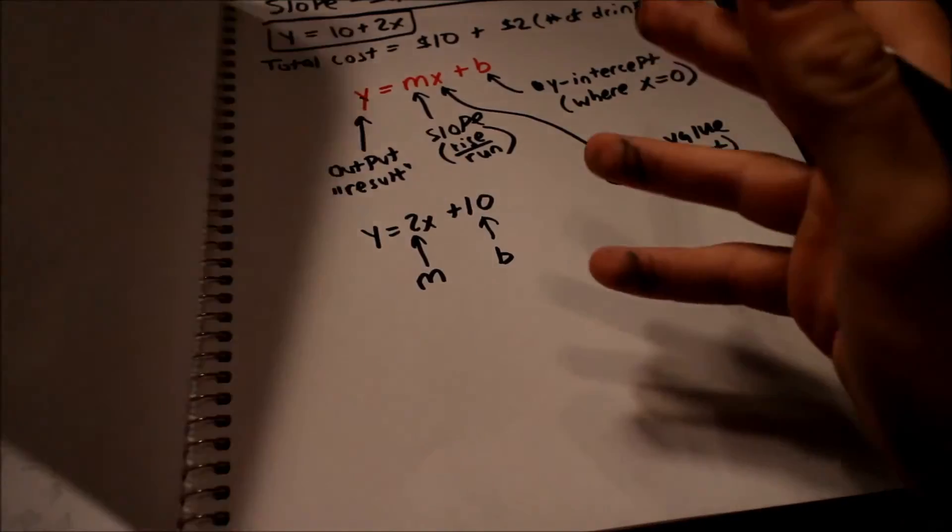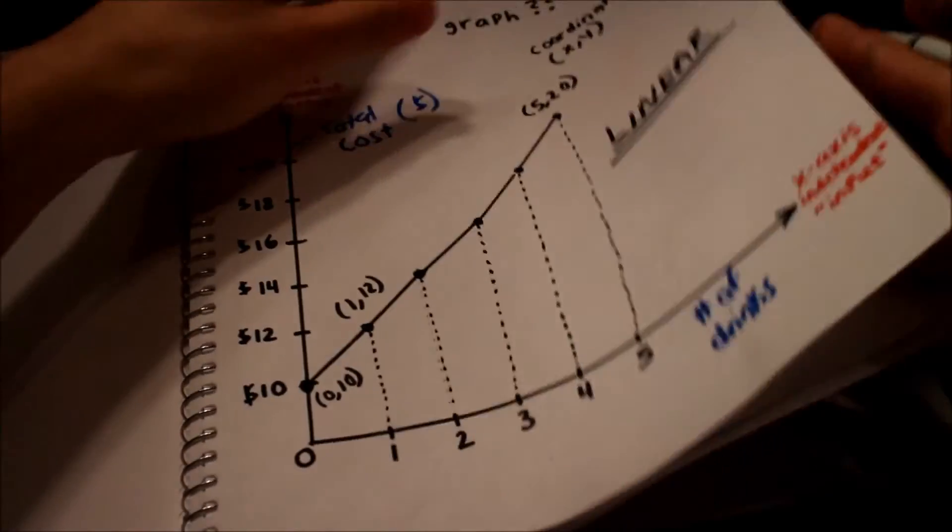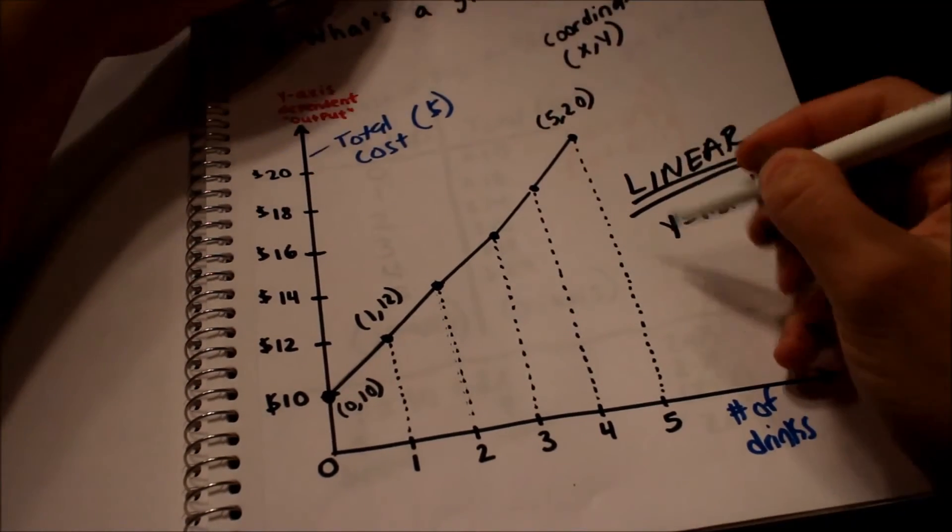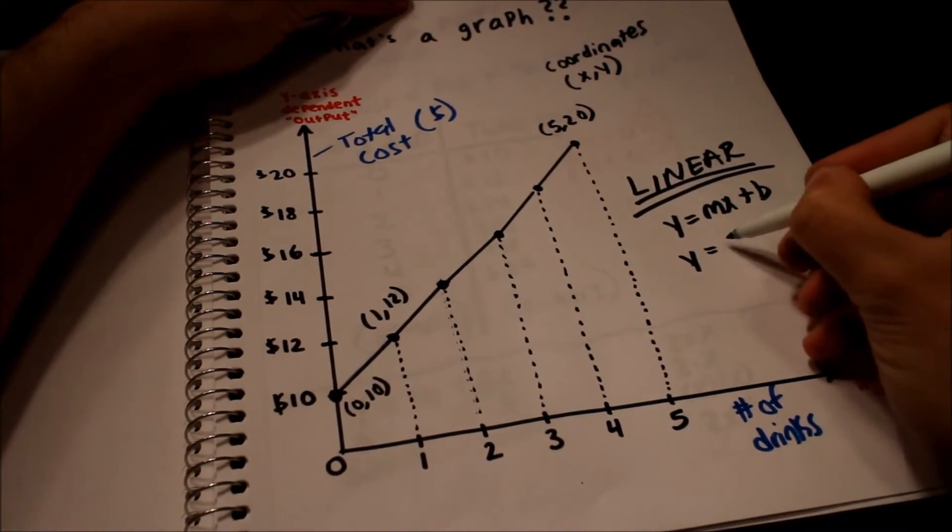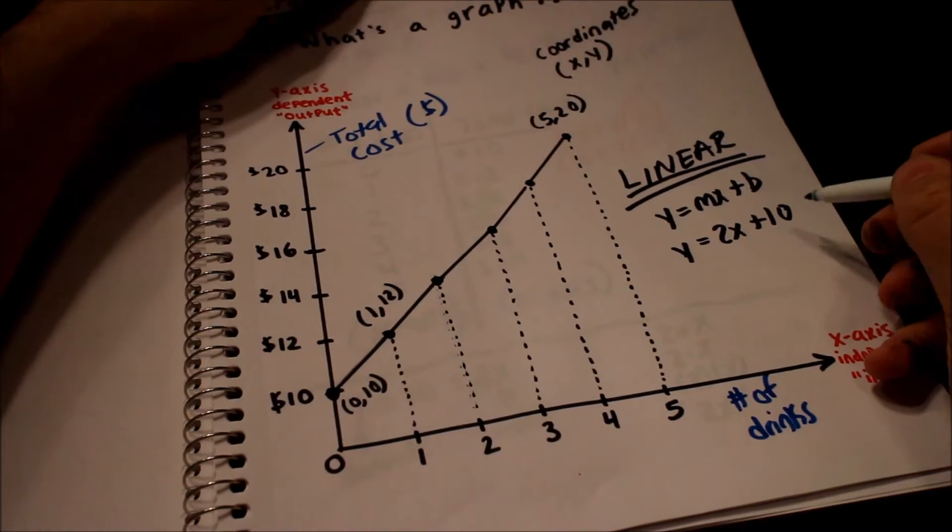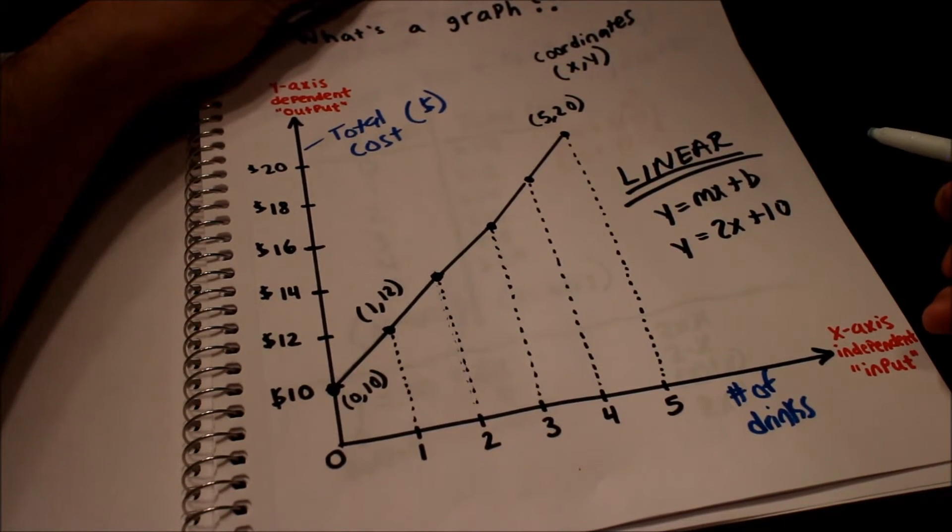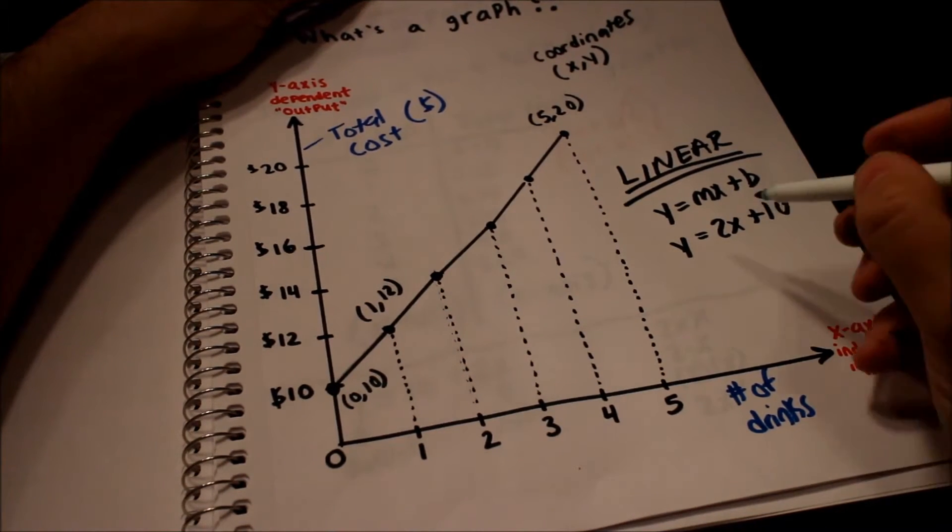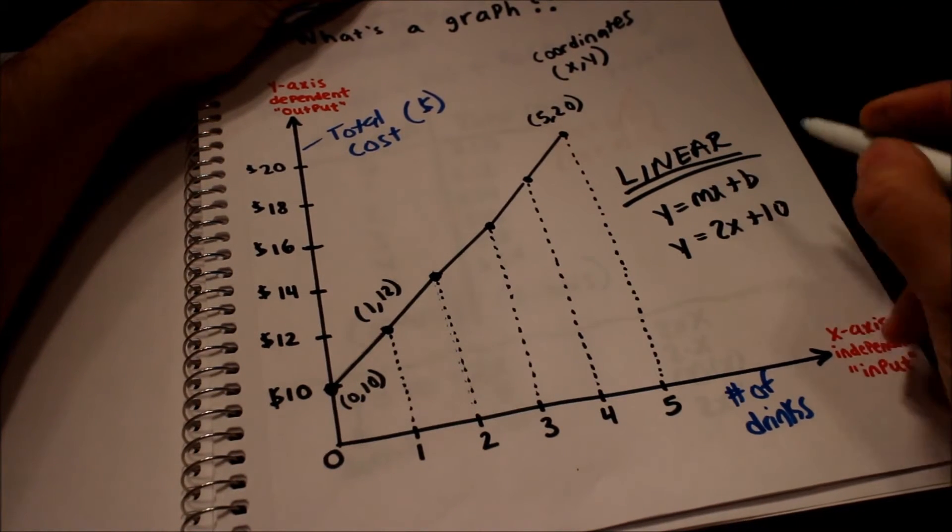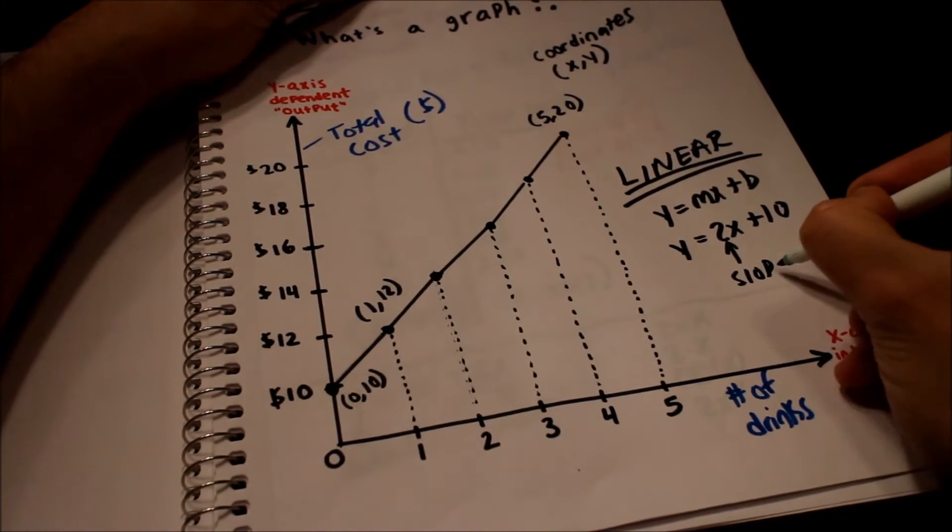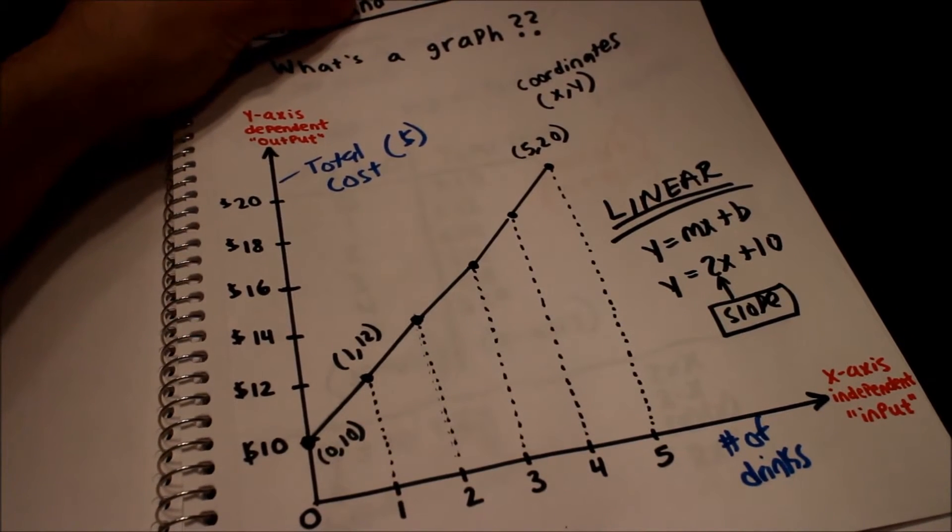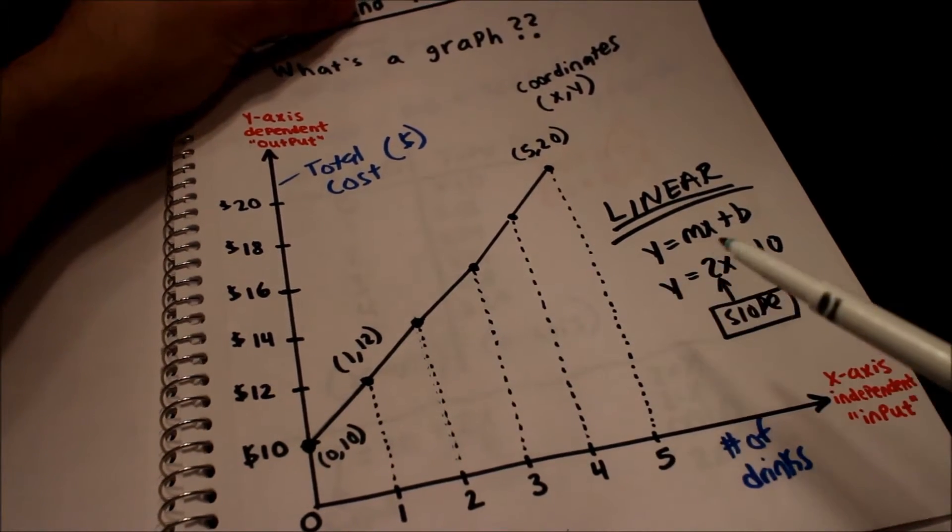So let's look at what the slope is. So we know linear means y equals mx plus b and we know for this example it was y equals 2x plus 10 for that graph. Two times the number of drinks plus the ten dollar cover fee. So what's the slope here? Well we know that m is slope and the 2 is occupying the space for m. So the slope is 2. That's our slope. But why? Why is 2 our slope? I told you that slope is always rise over run.